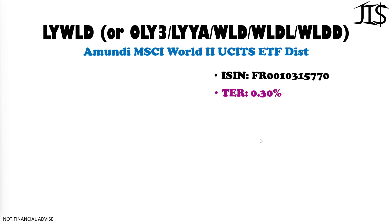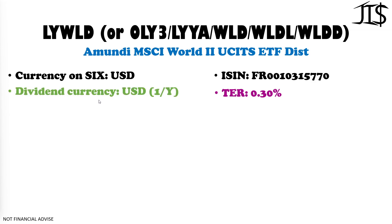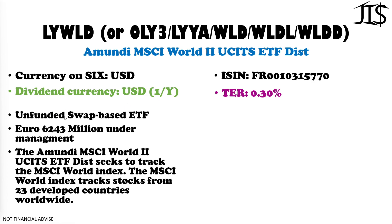Another example is the Amundi MSCI World UCITS ETF distribution — possibly a world record for European ETFs with six ticker symbols, though you can always find it with the ISIN code. The total expense ratio is 0.30%, currency is US dollar, dividends are paid once a year — it used to be twice a year but changed, likely due to it being an unfunded swap-based ETF, making it harder to pay out dividends. There is 6.2 billion euro under management in this ETF. Swap-based ETFs are really popular with investors, apparently.